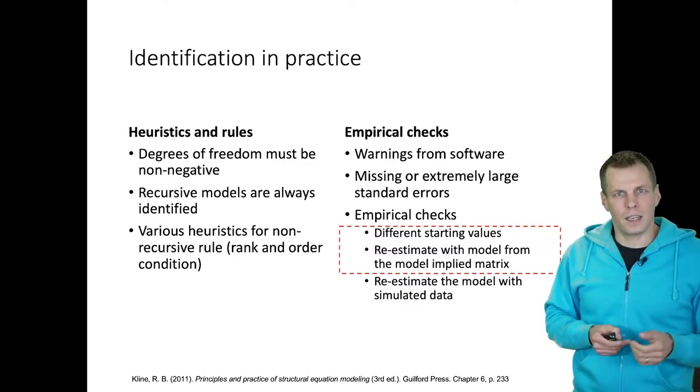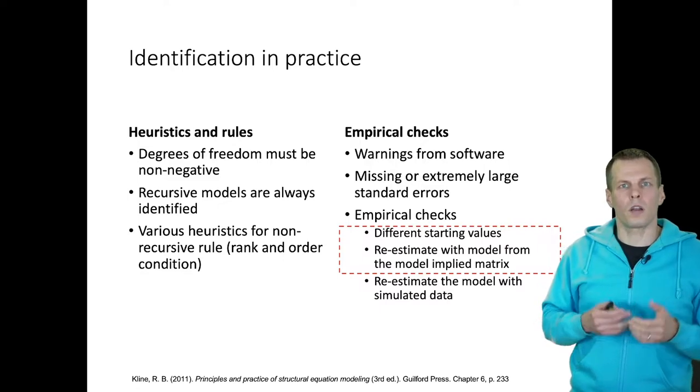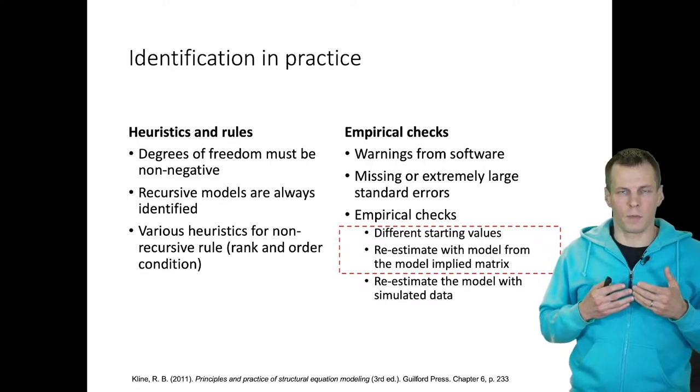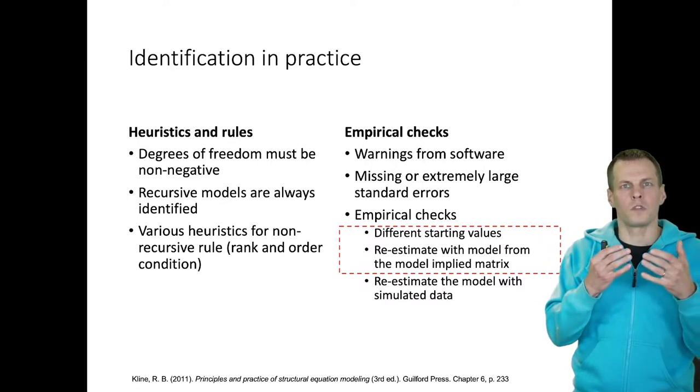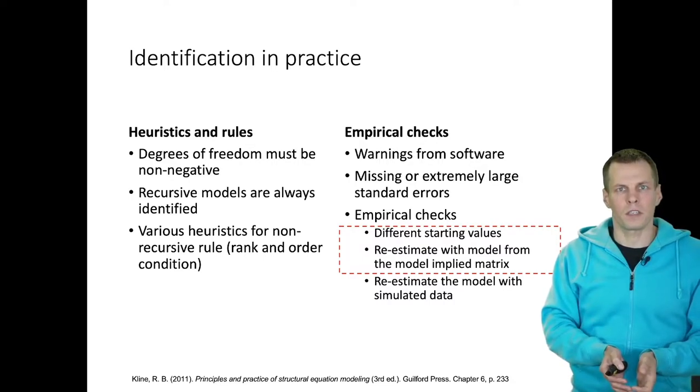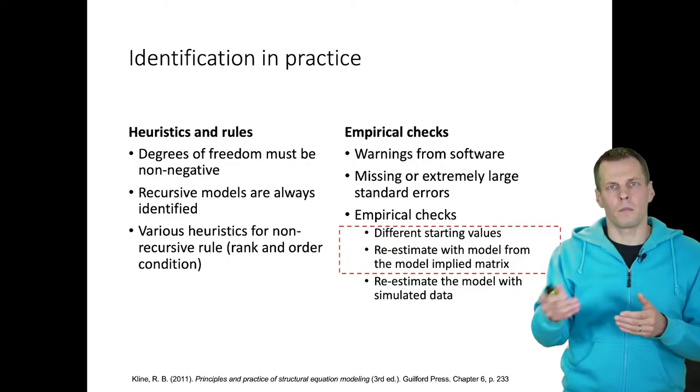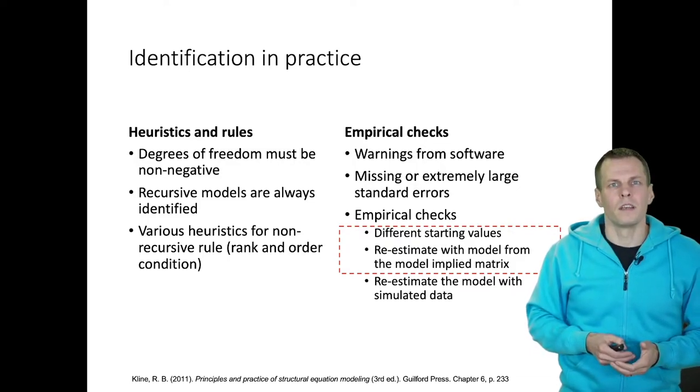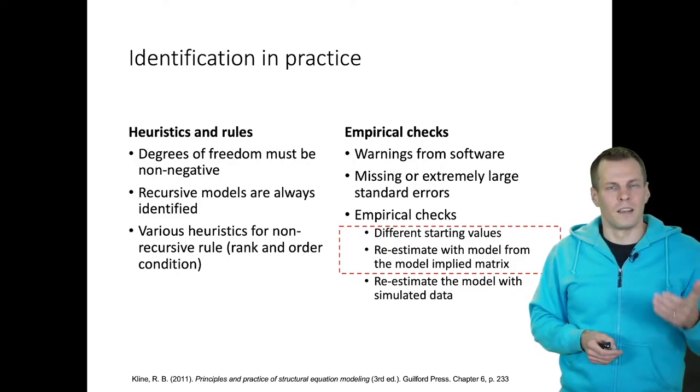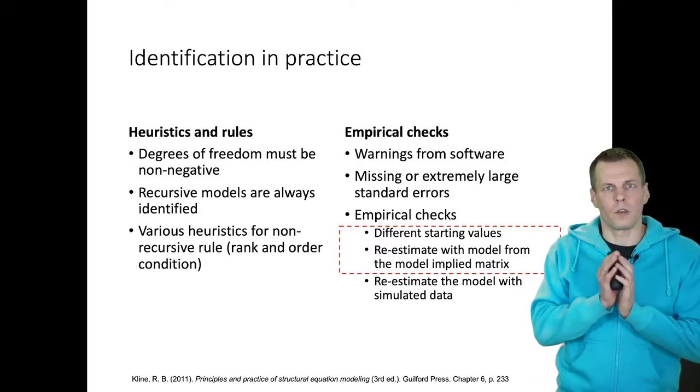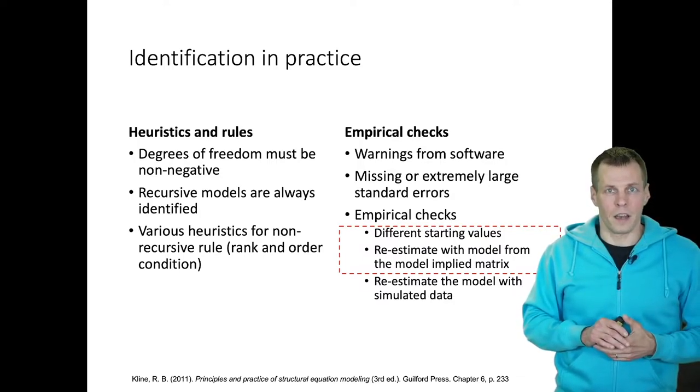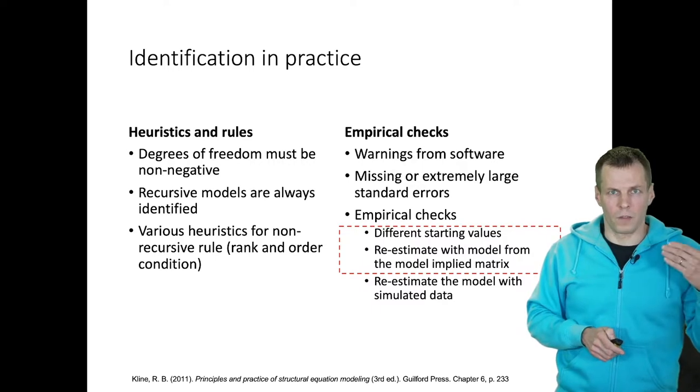Another technique is to take the model implied covariance matrix from a set of estimates and use that model implied covariance matrix as your new sample and then fit the model to that model implied matrix. If you get the same result, then the model might be identified. If you get a different result, then it's not identified for sure.